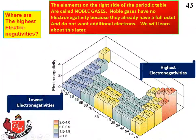There is one exception — one difference between electronegativity and ionization energies. The elements on the far right side of the periodic table are called noble gases: helium, neon, argon, krypton, and so forth. Noble gases have no electronegativity because they already have a full octet and do not want additional electrons. You'll notice that the noble gases don't appear in the electronegativity diagram — they're happy the way that they are.